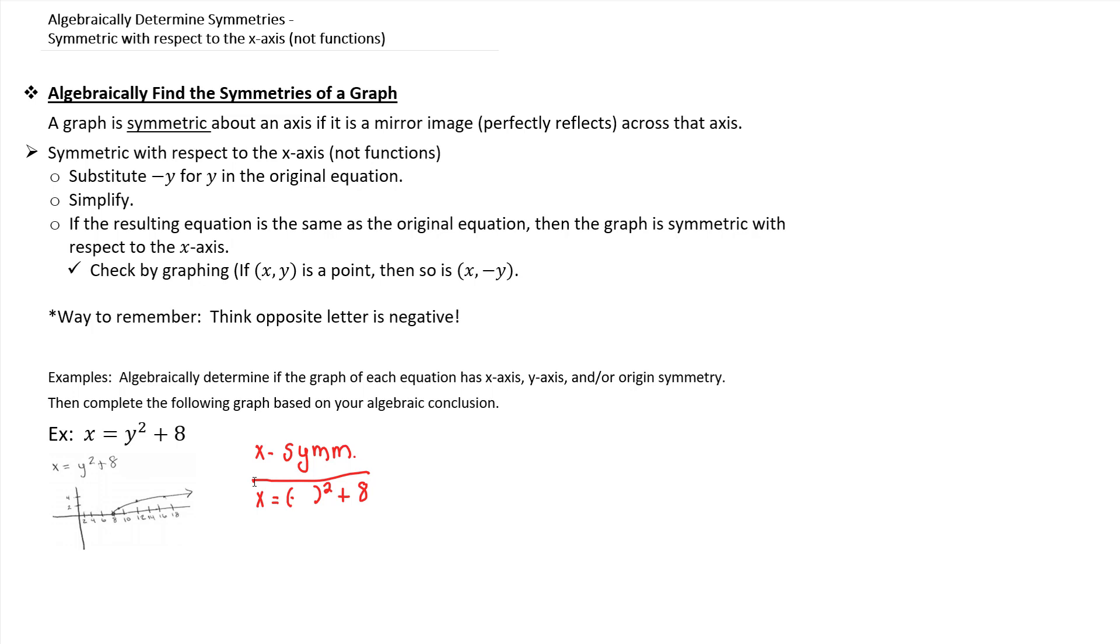So where there's a y, replace it with negative y. So if we do that, we get x = (-y)² + 8. But a negative y times itself, which is squaring, would be a positive y². Now notice, if you compare this equation to the original, both the left-hand side and the right-hand side are identical. They are the same. So if you replaced y with negative y, you got the same equation back.